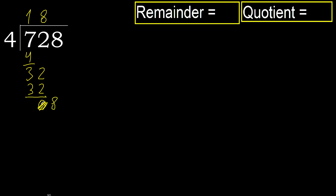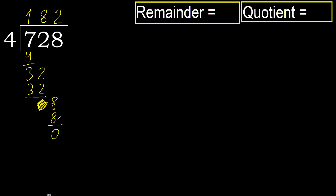Eliminate the 0. Bring down 8. 4 multiplied by 3 is 12, which is greater. Multiply by 2: 4 multiplied by 2 is 8, which is not greater. Subtract. Next.